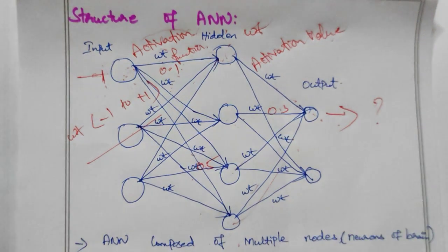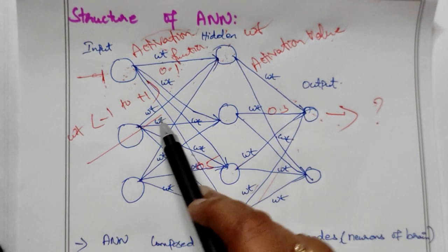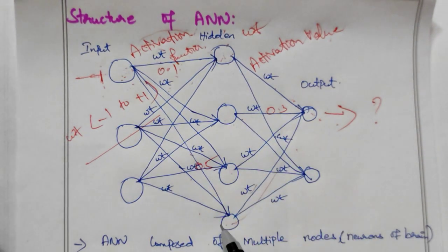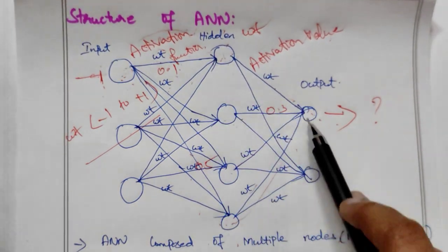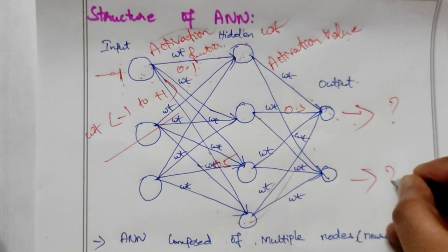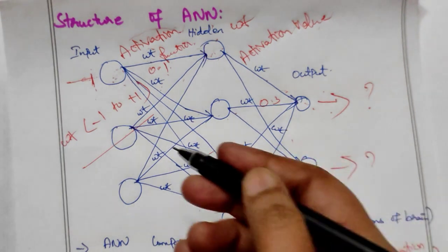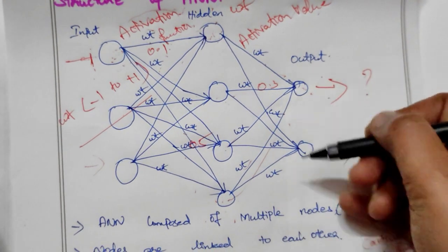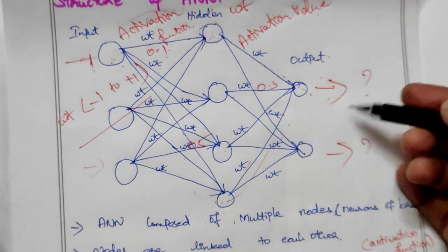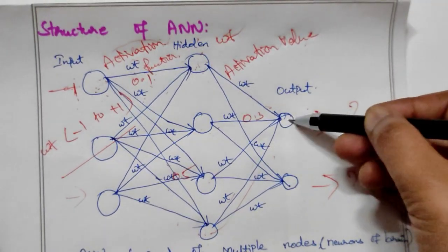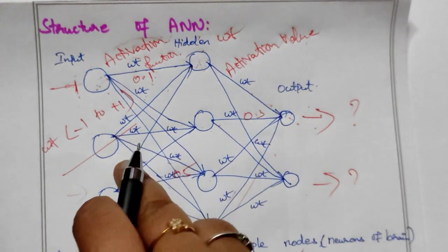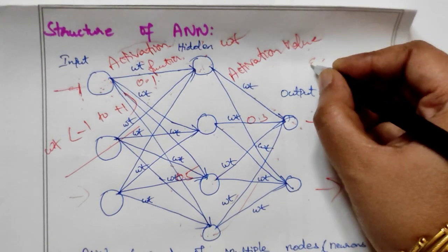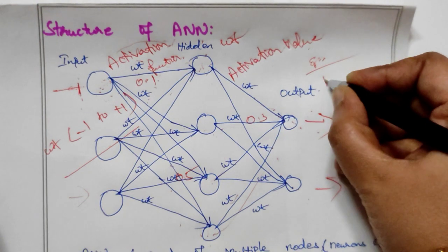The output layer produces the final result. For example, with four nodes in the hidden layer and inputs from multiple nodes, the output layer may have two nodes, giving two different outputs. If we have three nodes in the output, we can perform three-node classification. The number of output nodes determines the number of classifications in the structure.